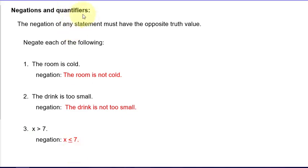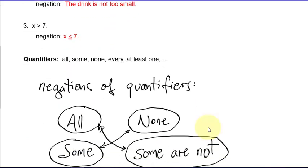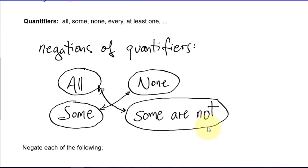Now let's look at quantifiers. Quantifiers are words like 'all,' 'some,' 'none,' 'every,' 'at least one,' 'nothing,' and 'each.' There are other words that might be logically interpreted as equivalent to these. These are the typical words you can identify as quantifiers.